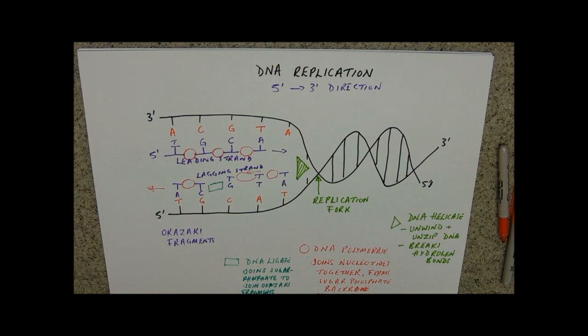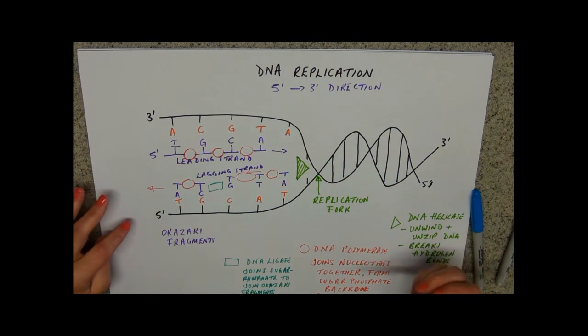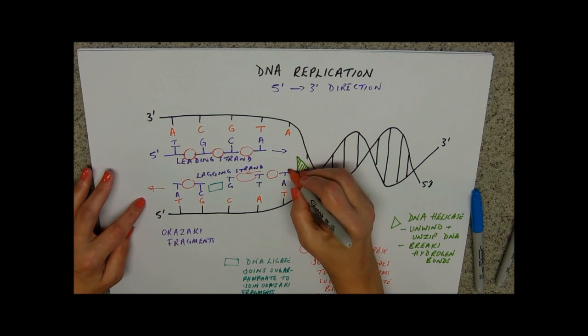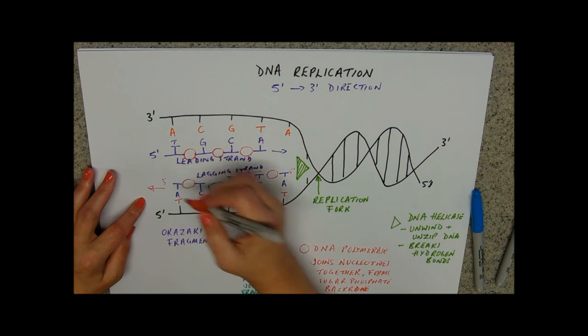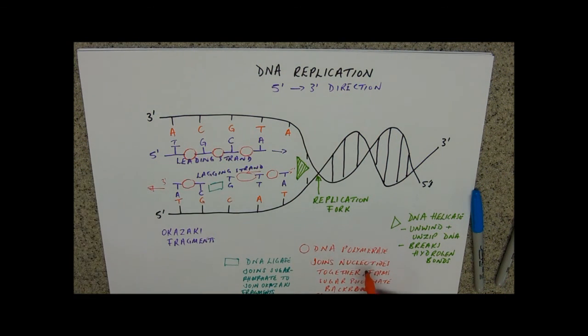And then we'll end up with two identical DNA molecules with their base pairs. So you do need to know that what we're doing is we're running from the five prime to three prime direction. That's the only direction that DNA polymerase does.